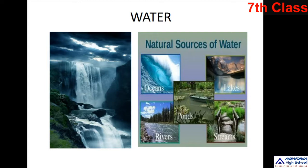Earth is a blue planet. What is the reason? Nearly 70% of the area is covered by water. That's why we call our planet a blue planet.